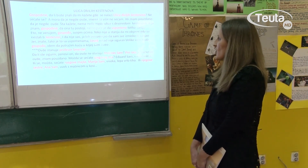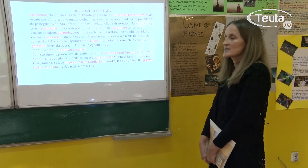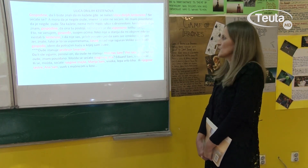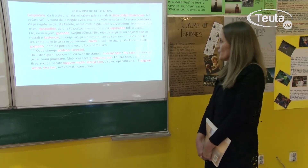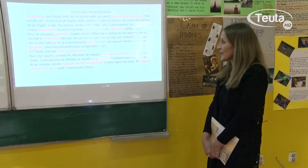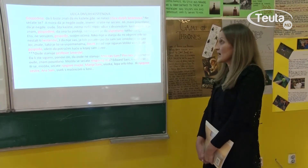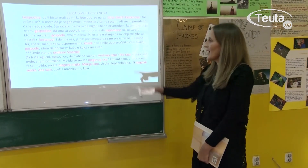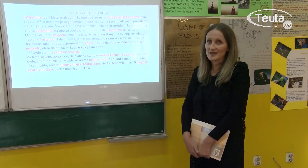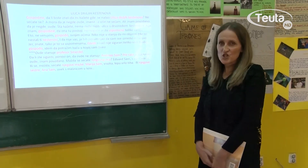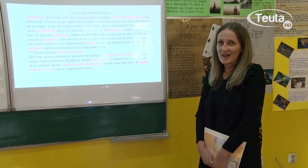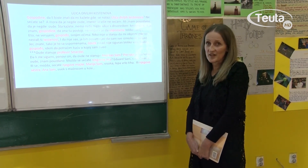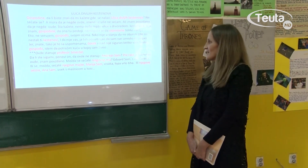Onda ovdje ne stanuje Andreja Sam — ko? Vlastito ime, junak Andreja Sam, nominativ. Pre rata je stanovao ovdje, znam pouzdano — kada? Pre rata — koga, čega? Rata. Znači genitiv, temporalni ili vremenski genitiv.